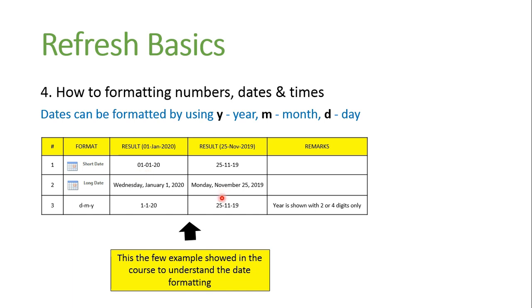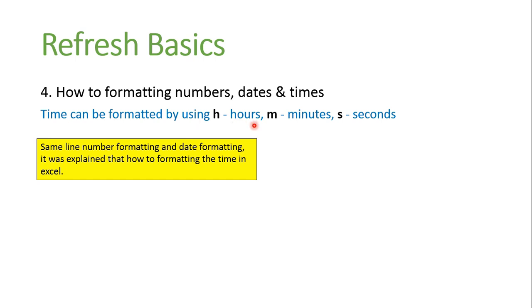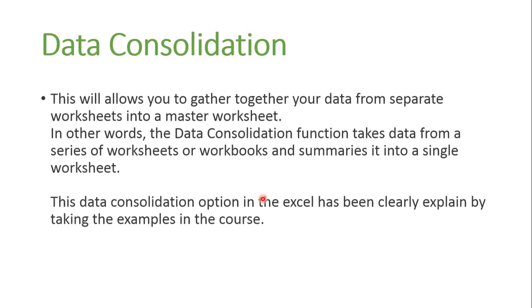When considering time formatting, you can use the H letter for hours, M letter for minutes, and S letter for seconds. Using these three letters, you can format your time according to your requirement. This has also been clearly explained in the course by providing examples in the Excel sheet.